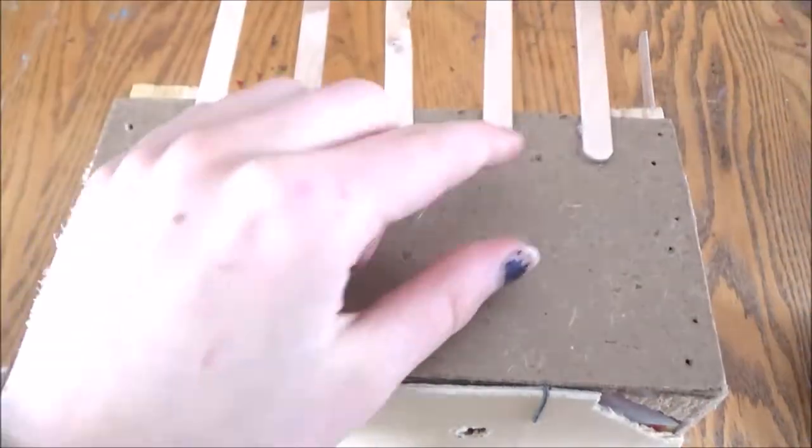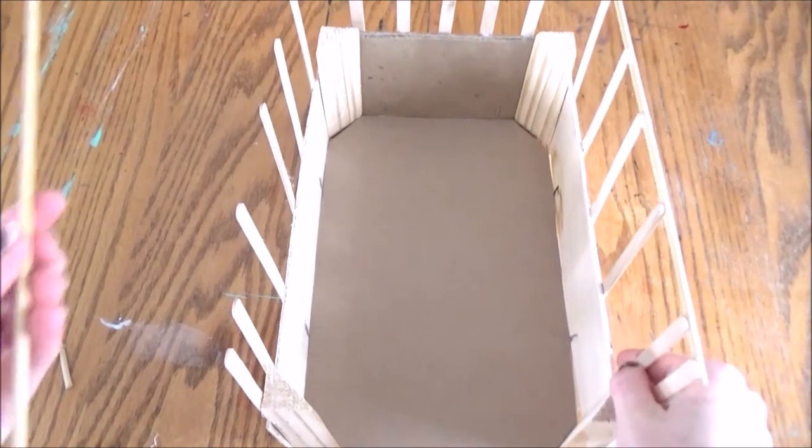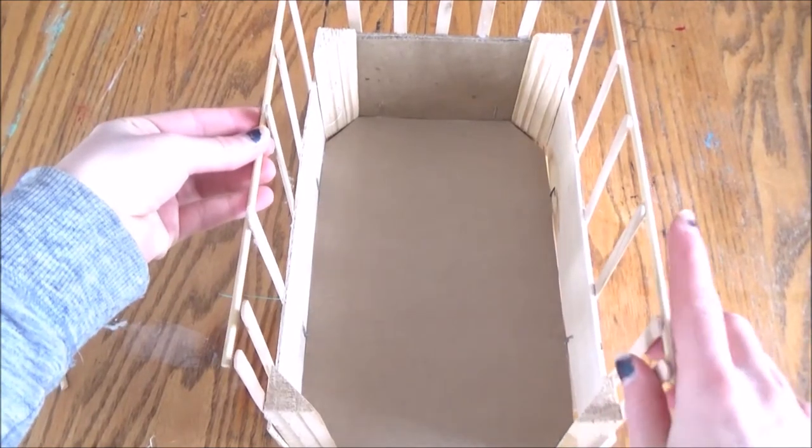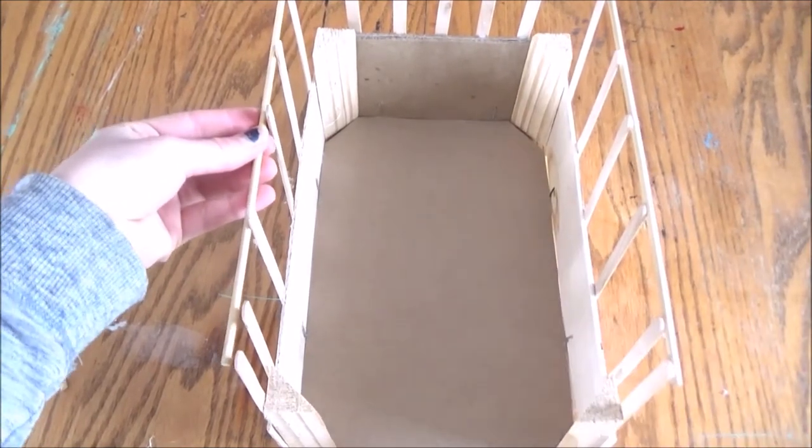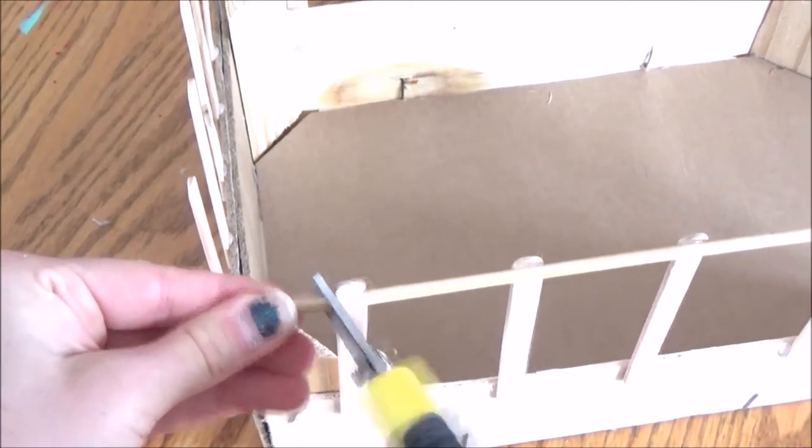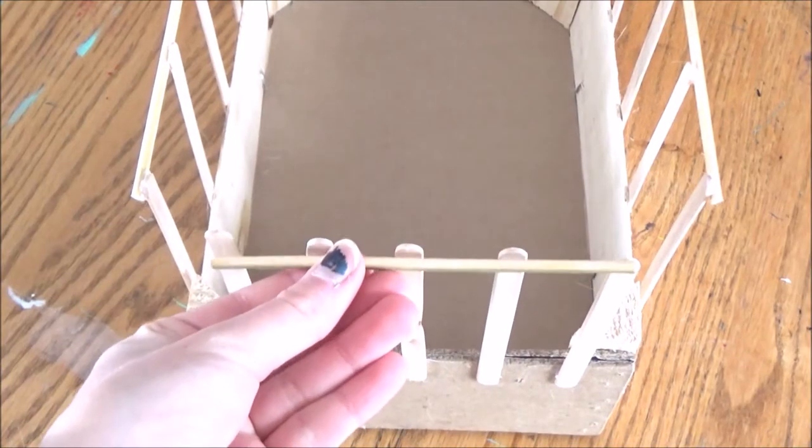So once you have that done all the way around you can glue either a thin wooden dowel or a skewer on both sides. I also for one of the crates glued just some more popsicle sticks around there even though you had to glue a couple popsicle sticks together but it did work as an alternative for the wooden dowel or skewer.